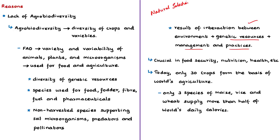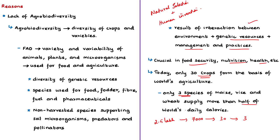Agrobiodiversity is crucial for food security, nutrition, health and agricultural landscapes. Out of 250,000 globally identified plant species, about 7,000 have historically been used in human diets. But today, only 30 crops form the basis of the world's agriculture, and just three species — rice, wheat and maize — supply more than half the world's daily calories. Even in India, rice and wheat are the staple crops and maize is also widely consumed. This demonstrates a clear lack of agrobiodiversity in the current global scenario.